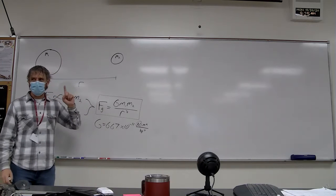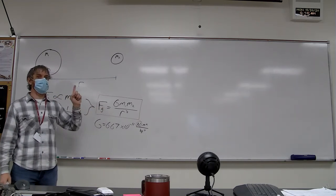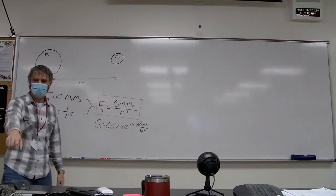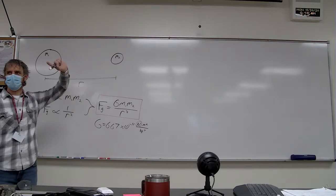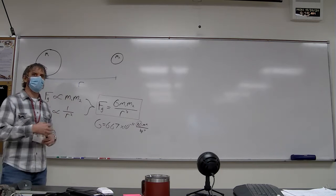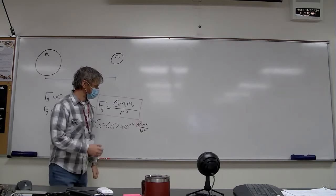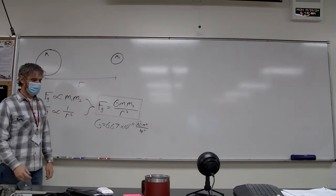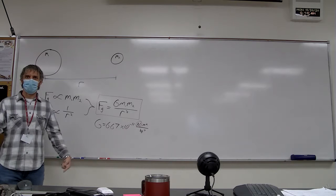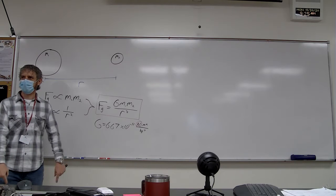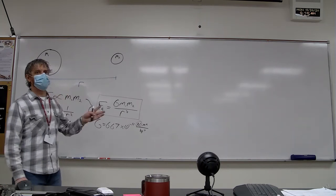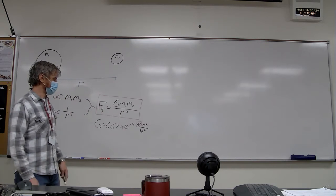This equation doesn't discriminate between objects. We all have gravitational attractions to each other, and to the mouse sitting up here, and to your friends in H Hall. Any two objects in the observable universe exert gravitational forces on each other. It's just that the gravitational force between two people is not enough to overcome the friction acting on my feet to prevent me from accelerating toward the other person.